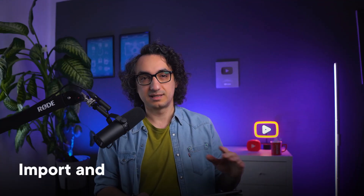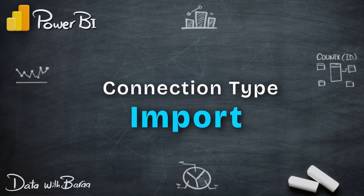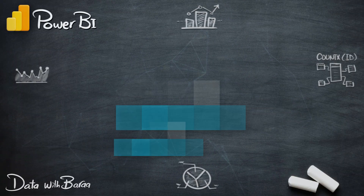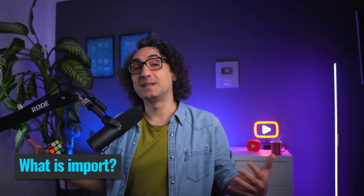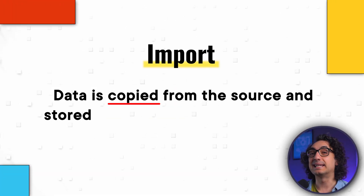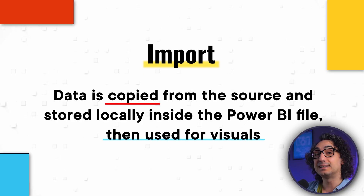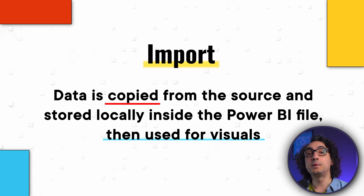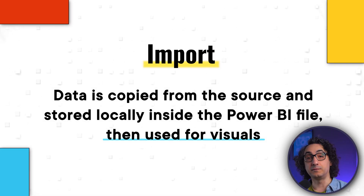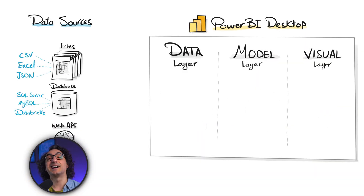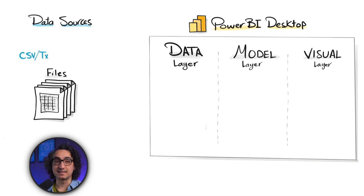Let's start with the first connection type: import. What is import? Import is a connection type where Power BI takes its own copy of your data and loads it inside the Power BI file. This copy of your data is then used for the visuals and for the next steps. Let's say your data lives inside files like CSV, Excel, JSON, or text files and you'd like to use Power BI to analyze it.